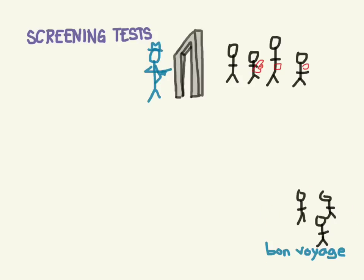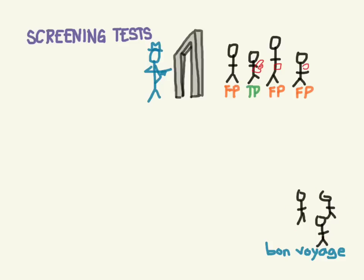The one with the gun is the only true positive; the others are false positives — one set off by a body piercing, one by his belt buckle. All the guys who didn't set off the detector are our negative tests, and we want to make sure these are all true negatives, because we're sending these guys on their way and we don't want to send someone with a gun onto the plane.